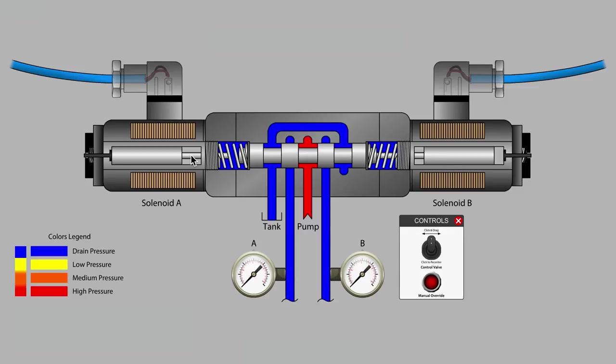Also observe that in the main valve body, there is a spring on each end of the spool that helps return the spool to the center position when the valve is in neutral. The lines with the gauges labeled A and B are the workports that typically connect to a hydraulic cylinder or motor.